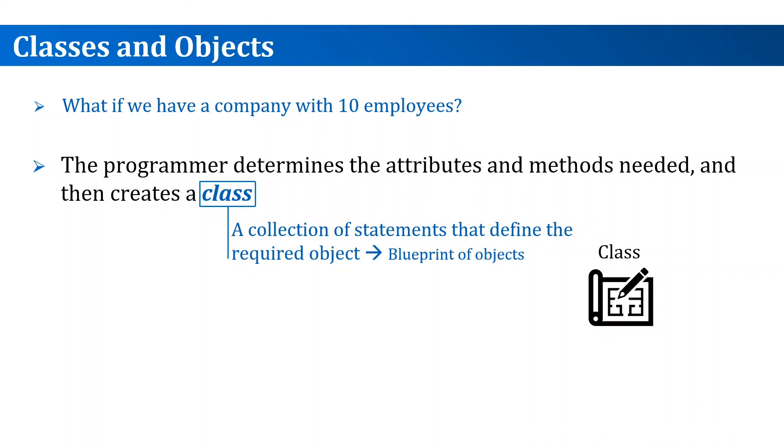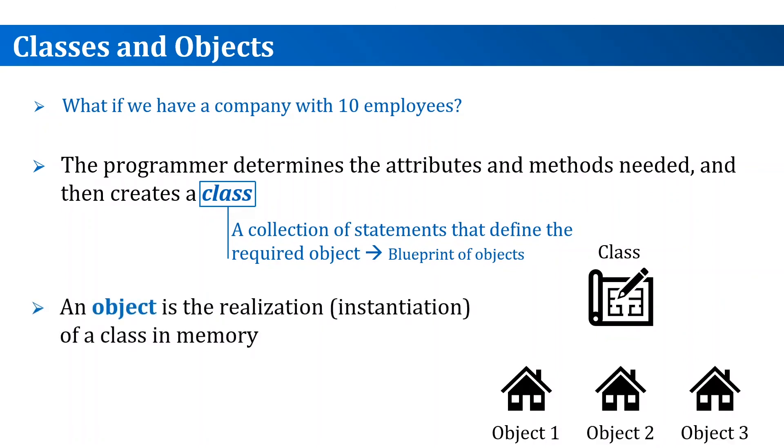A good analogy of classes and objects would be the blueprint of a home. Once you have a class of homes—the blueprint—you can create as many home objects from that design. They will look like each other in terms of the structure, but each one will have its unique attributes. Attributes could be street number, color, and owner.